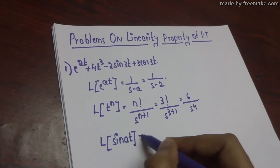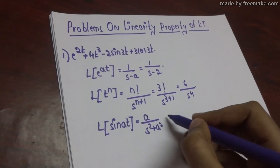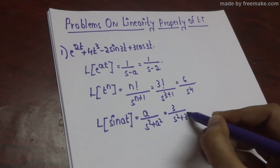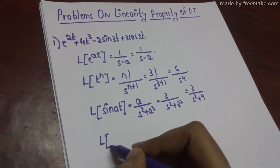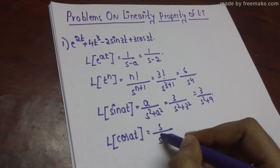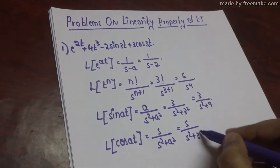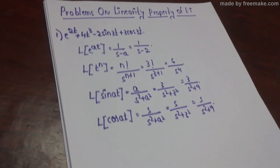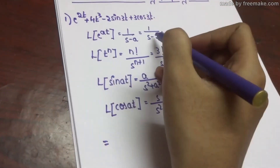The Laplace of sine at is equal to a by s square plus a square. Here for sine 3t, a is 3, so it is 3 by s square plus 9. The Laplace of cos at is equal to s by s square plus a square. Here a is 3, so 3 square is 9, giving s by s square plus 9. Now substitute these values.